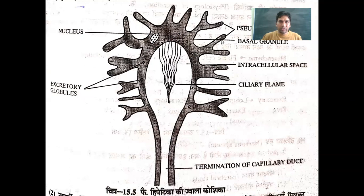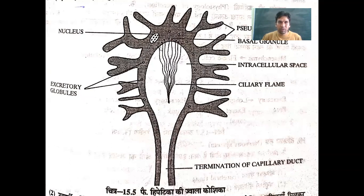In this way, this cell is an amoeboid-shaped cell with many pseudopodia on all sides, which collect excretory products. In the middle of this cell there is a large cavity — an intracellular space — and in this space many cilia are found. The origin of these cilia is from the basal granules located here.